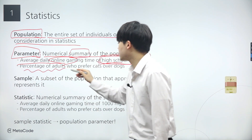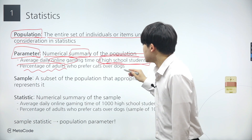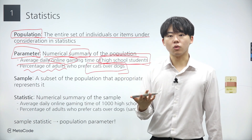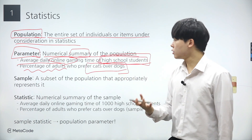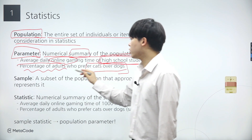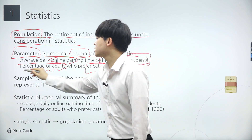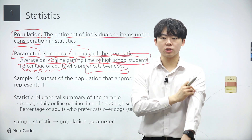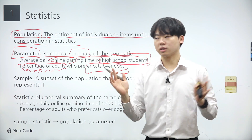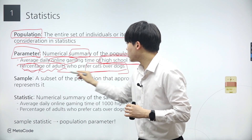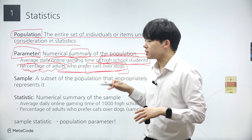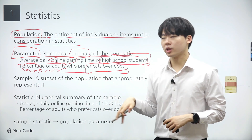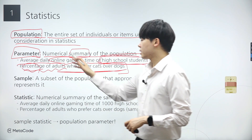Similarly, the percentage of adults who prefer cats over dogs exemplifies parameters within statistical analysis. In this context, the entire adult population constitutes the group of interest, with the percentage of preference for cats serving as a numerical summary.